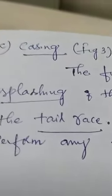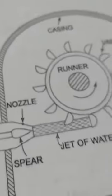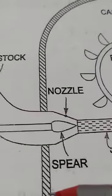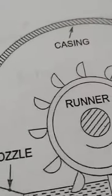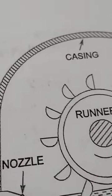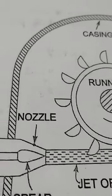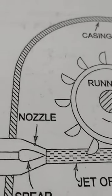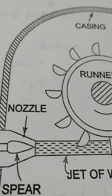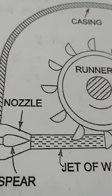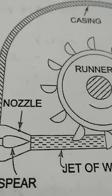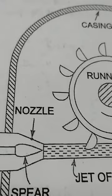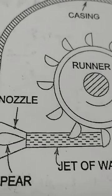The third main part is the casing. Refer to figure 3. The casing is whatever surrounds the turbine — it is the protective cover. The casing does not have any hydraulic function; it is just protection. It protects the people working near the turbine and prevents the splashing of water from the turbine, which would otherwise keep that area wet.